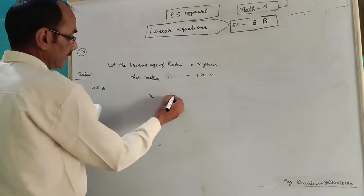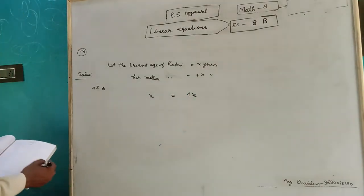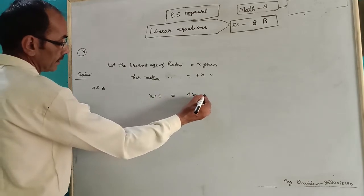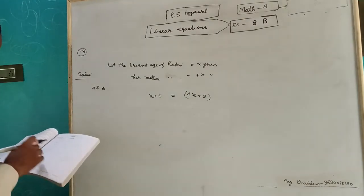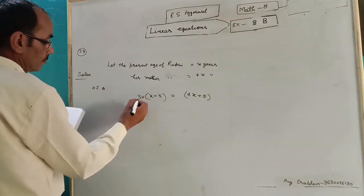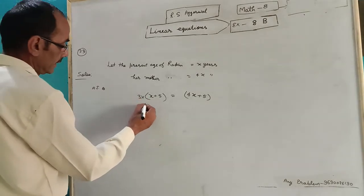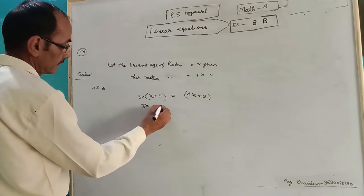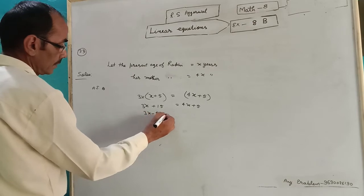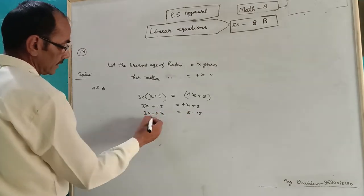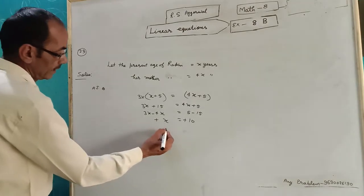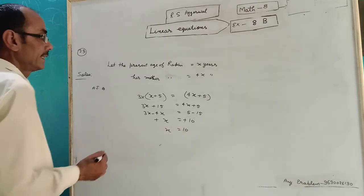According to question, Rocky and his mother, after 5 years, mother will be 4x plus 5, will be 3 times of Rocky. So 3 into Rocky. 3x plus 15 is equal to 4x plus 5. 4x is reached to the left hand side and 15 is reached to the right hand side. After minus, x is equal to minus 10. Minus divided by minus, then x value is 10.